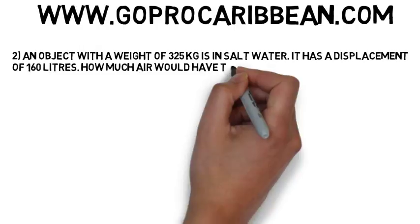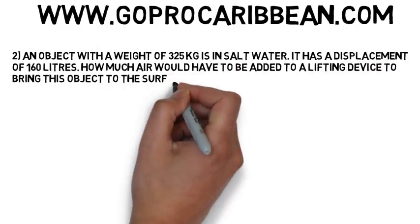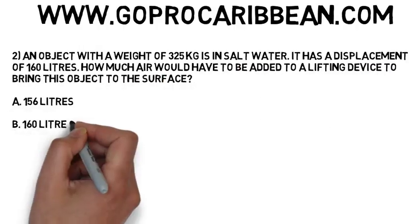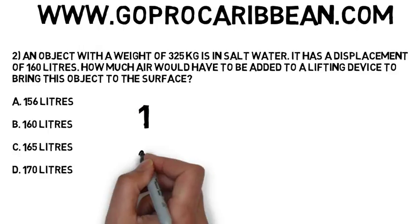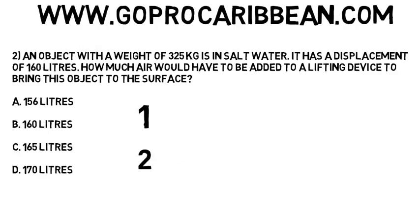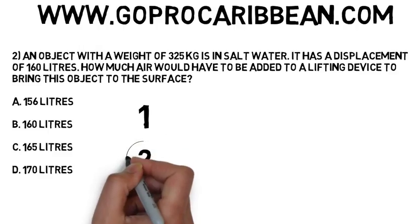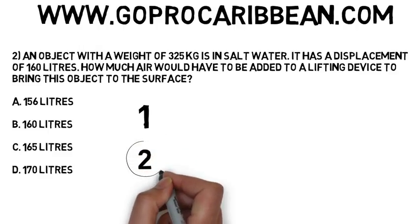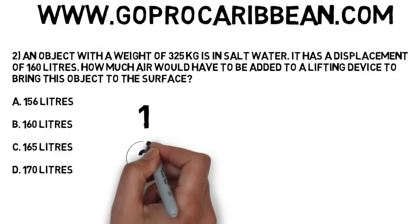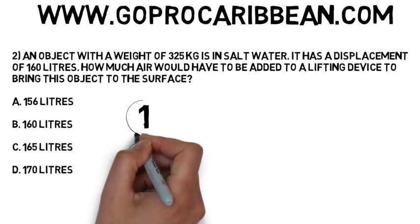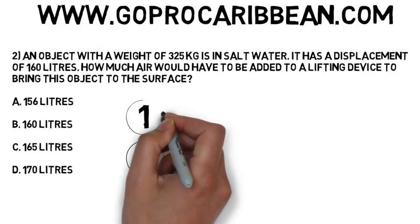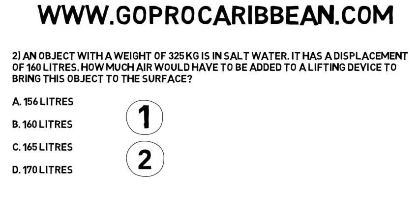We're going to use the two-step process that you already learned in the previous videos, so we can write our number one and number two down. What's the first thing we focus on in step one? We need to look at the object's weight. Looking at the question, we can see that we have an object with a weight of 325 kilograms.